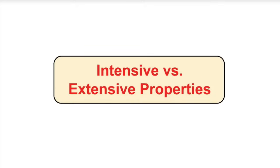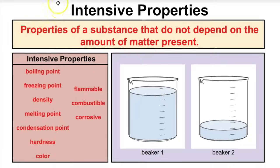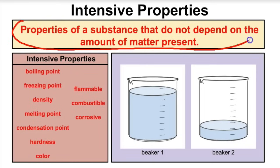Hey you guys, this is Mr. Millings, and today we're going to learn about intensive versus extensive properties of matter. Intensive properties are properties of a substance that do not depend on the amount of matter present. What does that mean? Let's suppose we have a beaker here filled with a lot of water, and another beaker that is not filled with very much water at all.